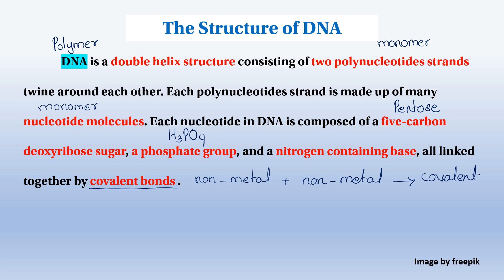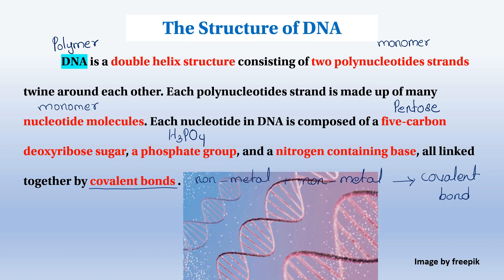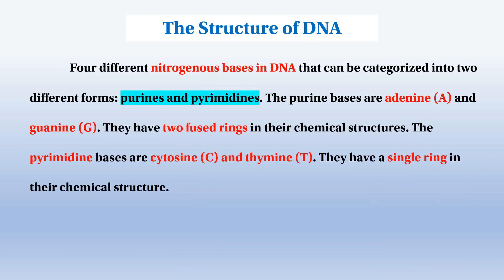In the biological molecule, the strands are held together by hydrogen bonds. There are four different nitrogen bases in DNA that can be categorized into two different forms: purine and pyrimidine.